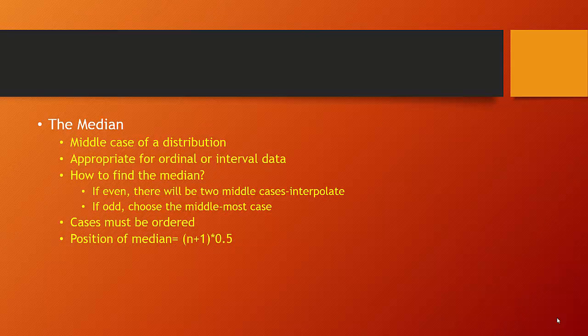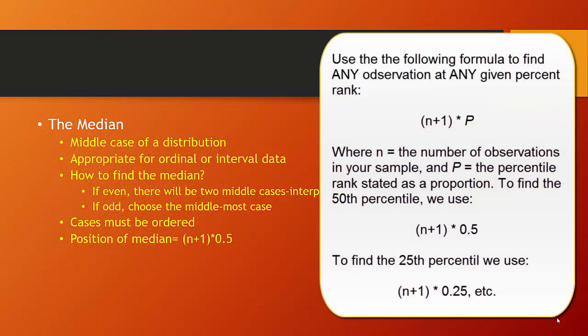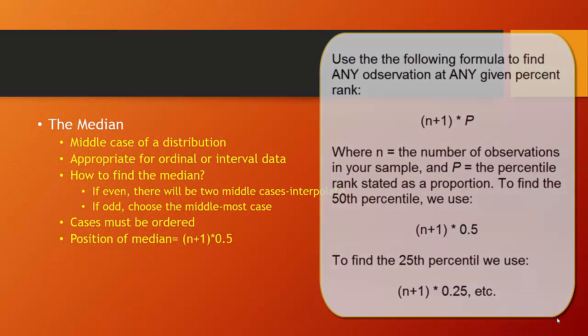To begin, you sort all observations in increasing order, then find the location of the median using the formula (n + 1) × 0.5. This formula also works for finding any percentile rank — for example, (n + 1) × 0.25 for the 25th percentile, or (n + 1) × 0.75 for the 75th percentile.